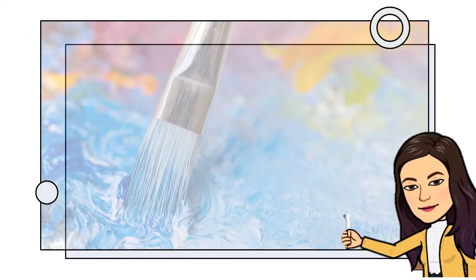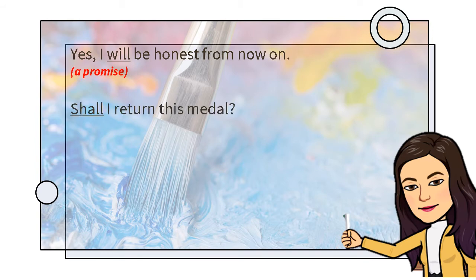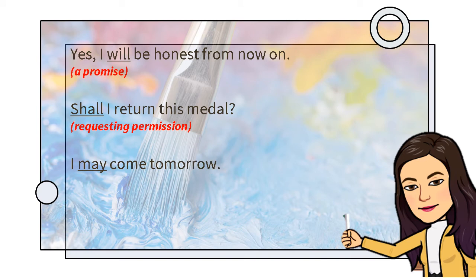Now, let's go back to the sentences we had a while ago. Yes, I will be honest from now on. The modal 'will' is used to express a promise. Shall I return this medal? The modal 'shall' is used in requesting permission. I may come tomorrow. The modal 'may' is used to express uncertainty.